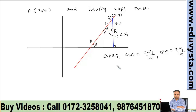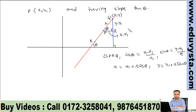And sin θ equals (y minus y1) upon r. Therefore, x equals x1 plus r cos θ, and y equals y1 plus r sin θ. So the coordinates of point Q are (x1 + r cos θ, y1 + r sin θ).